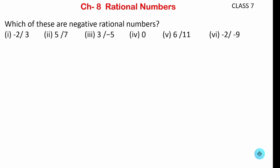The next question on the same page: which of these are negative rational numbers? We have 6 questions and we have to find out which is a negative rational number. The first one is minus 2 upon 3 — here only one negative sign, so yes, it is a negative rational number. The second one is 5 upon 7 — no negative sign, so no, it is not.